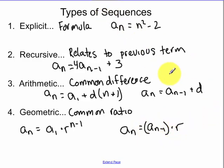Recursively, we take the previous term and we multiply it by the common ratio. So just so you guys realize, Arithmetic, we add. Geometric, we multiply.